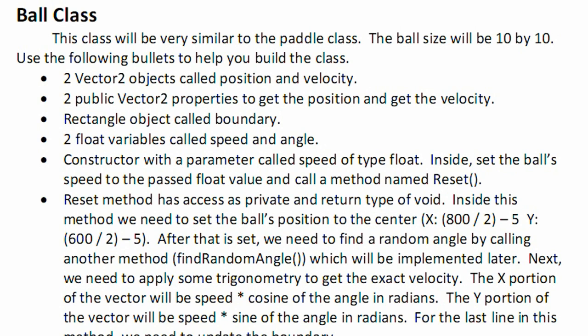Two public Vector2 properties to get the position and to get the velocity. Rectangle object for the boundary. Two float variables called speed and angle. The constructor with the parameter called speed of type float. Inside the constructor, we will set the ball's speed to the past float value and call a method named Reset.